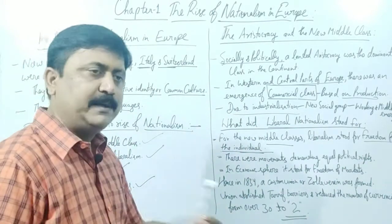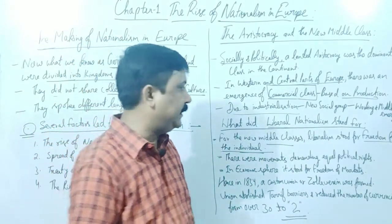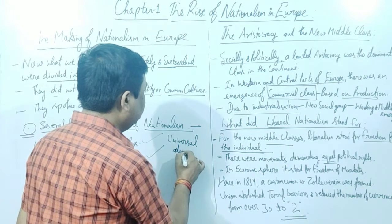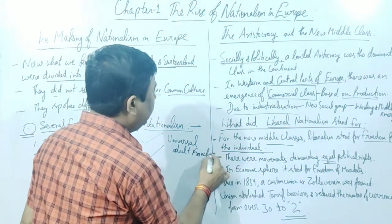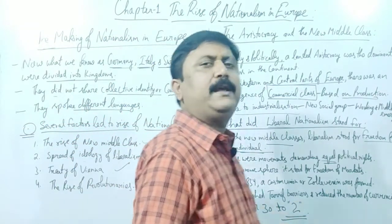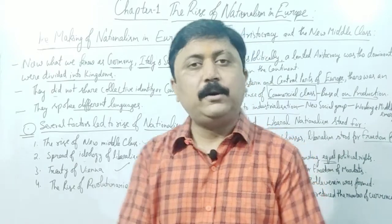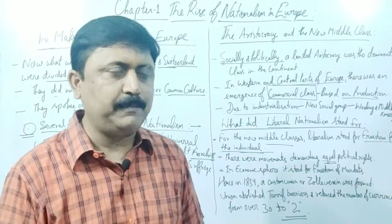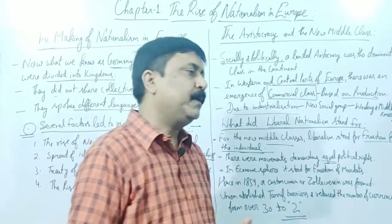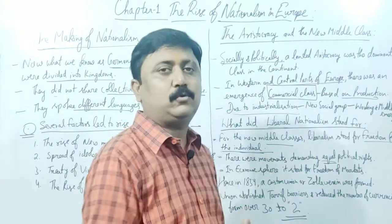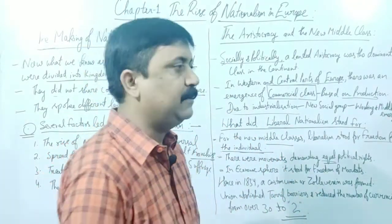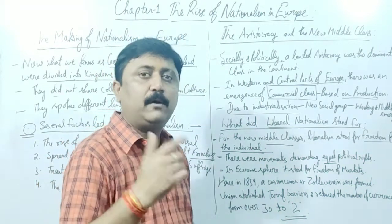Many movements were started for equal political rights. Equal political rights means what you call Universal Adult Franchise — or in some places it is written as Universal Adult Suffrage. Universal adult franchise means voting rights to all. If we talk about India, the concept is that those of age 18 and above have voting rights. Liberal nationalism stood for this. It provides equal rights because we all have the right to choose the government and to contest elections — in India the contesting age is 25 years and the voting age is 18 years.